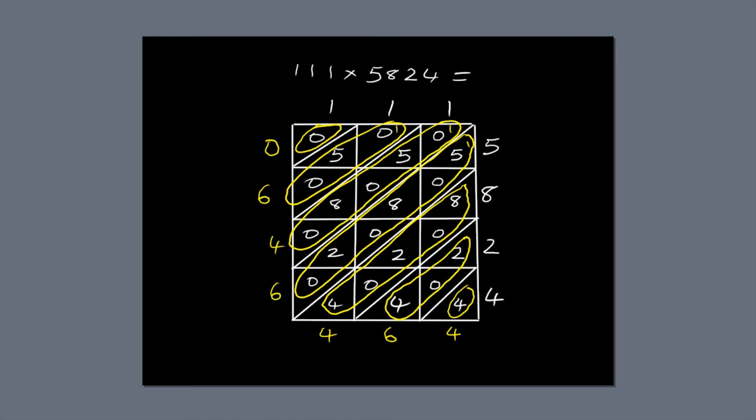Now we just read off the answer. The first number is 0, so we don't need to include that. 6, 4, 6, 4, 6, 4. 111 times 5,824 equals 646,464.